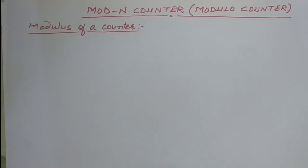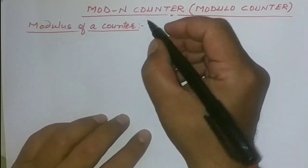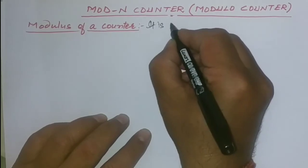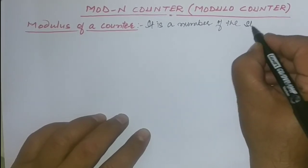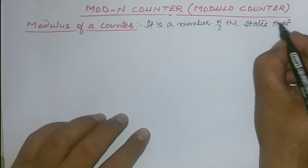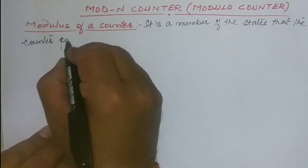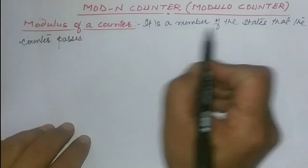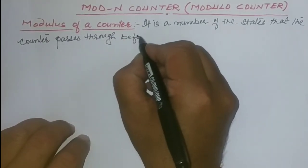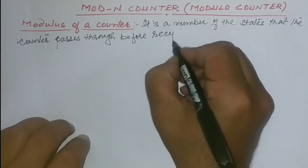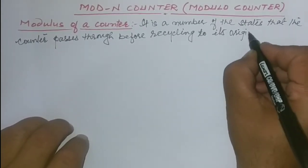First of all we need to define what is the modulus of a counter. The modulus of a counter is the number of states that the counter passes through before recycling to its original value.